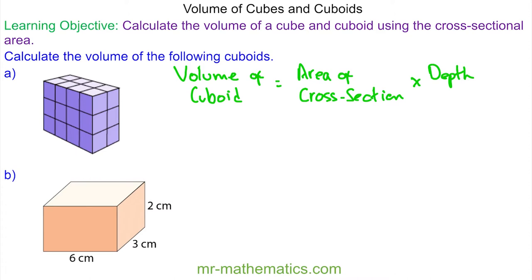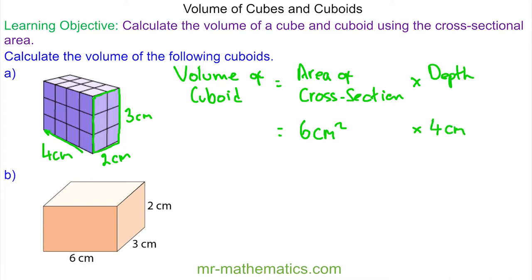So to work out the volume, I am going to choose this cross-section here. The area of this rectangle — with each cube representing one centimetre — is two centimetres by three centimetres. So the area of this cross-section is two times three, which is six centimetres squared. And the depth is four centimetres. So we multiply the area of the cross-section by the depth: six times four is 24 centimetres cubed.